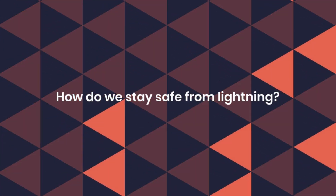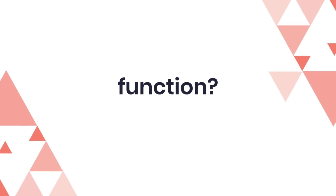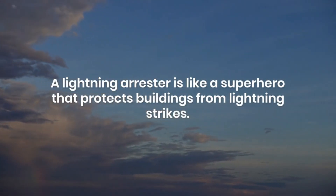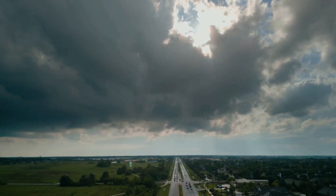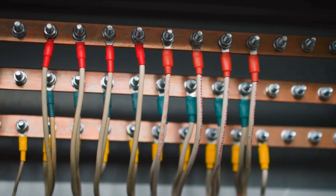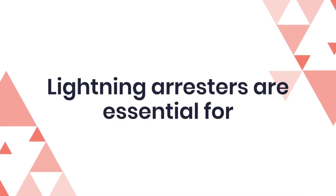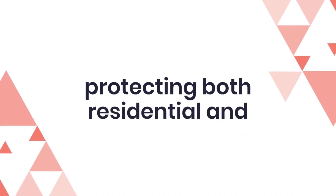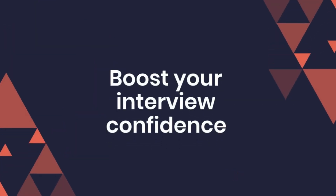What is a lightning arrestor and its function? A lightning arrestor is like a superhero that protects buildings from lightning strikes. It provides a path for lightning to travel safely into the ground, preventing damage to electrical systems and structures. Lightning arrestors are essential for protecting both residential and industrial installations.